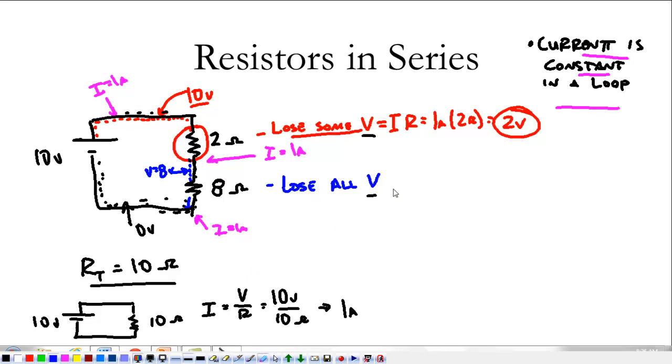If we wanted to, we could calculate that out. This voltage is equal to current, 1 amp times 8 ohms. That means I'm going to lose 8 volts across that resistor, bringing me down to 0 volts, getting me back to the battery. We'll spend some more time talking about how this works in class on Monday, but these are the basics of resistors in series.